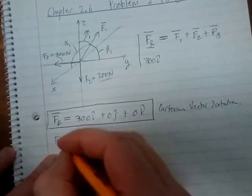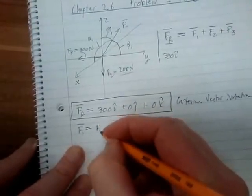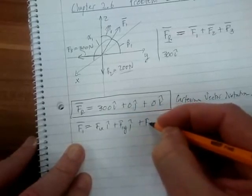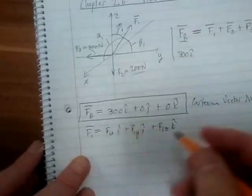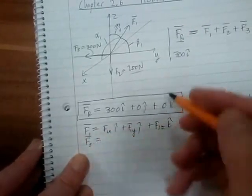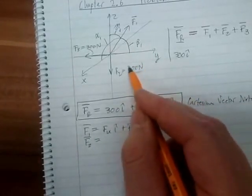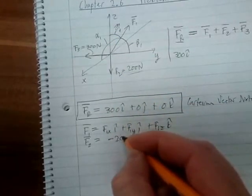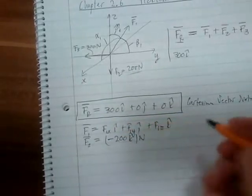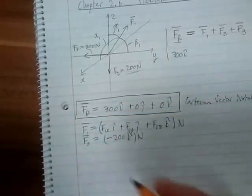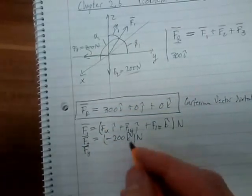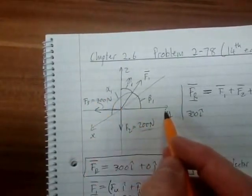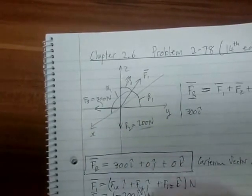F1 is equal to F1x·i plus F1y·j plus F1z·k. F2 — the magnitude is 200 and it's going in the negative z direction — is written as minus 200k newtons. F3 has a magnitude of 300 and it's going in the negative y direction, so it is written as minus 300j newtons.